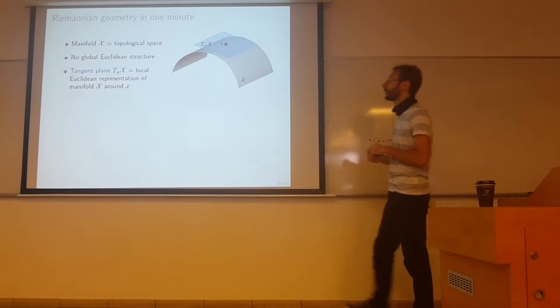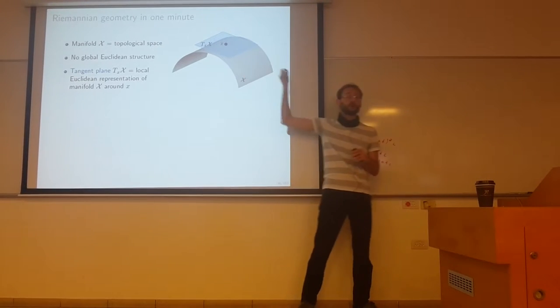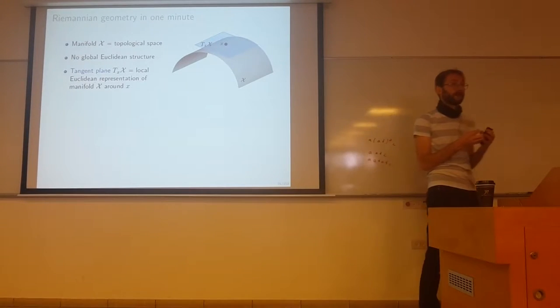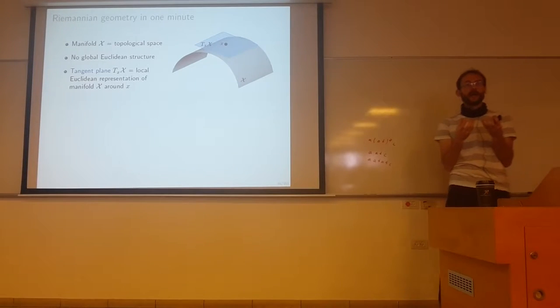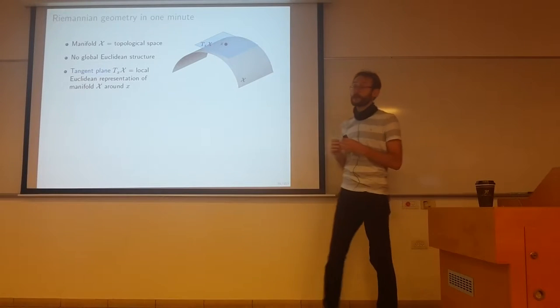So it's a topological object. But it's locally Euclidean, meaning that around each point you can find an open set that will be homeomorphic to a Euclidean space.